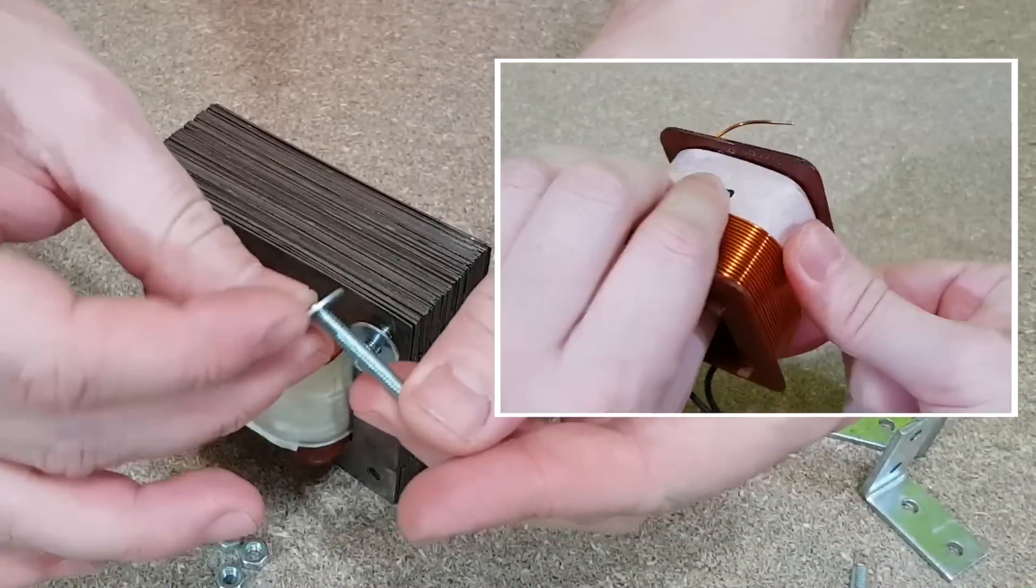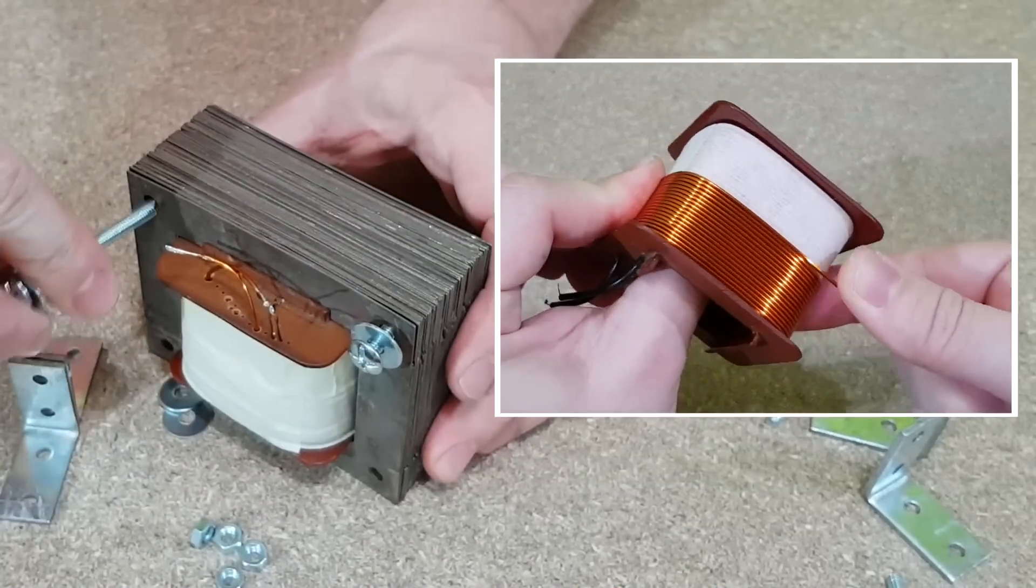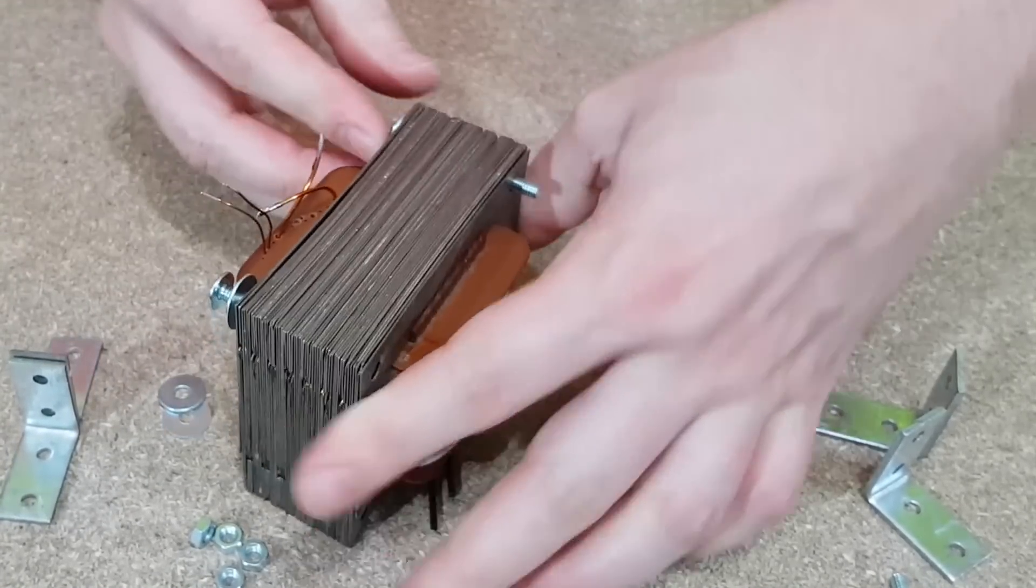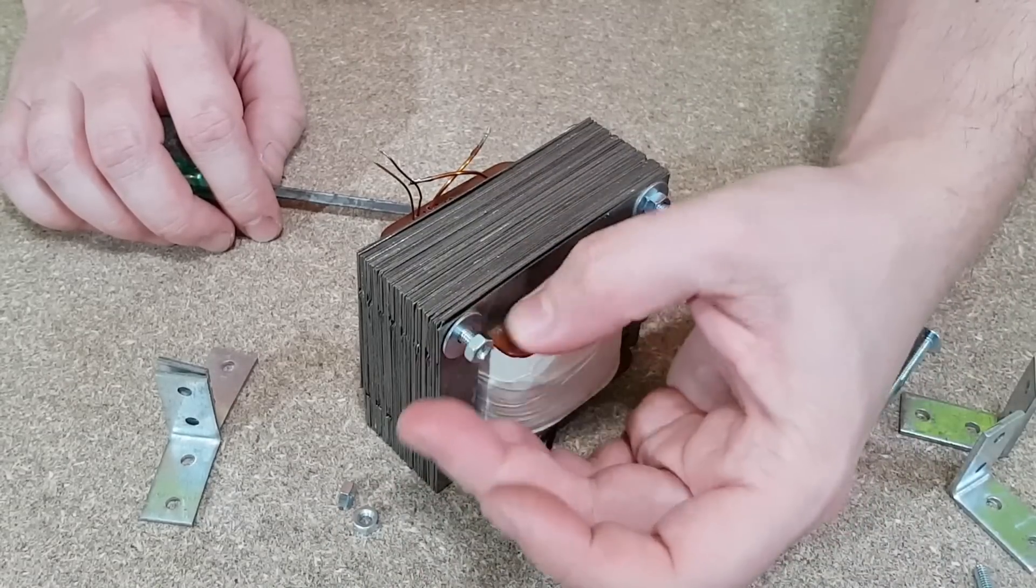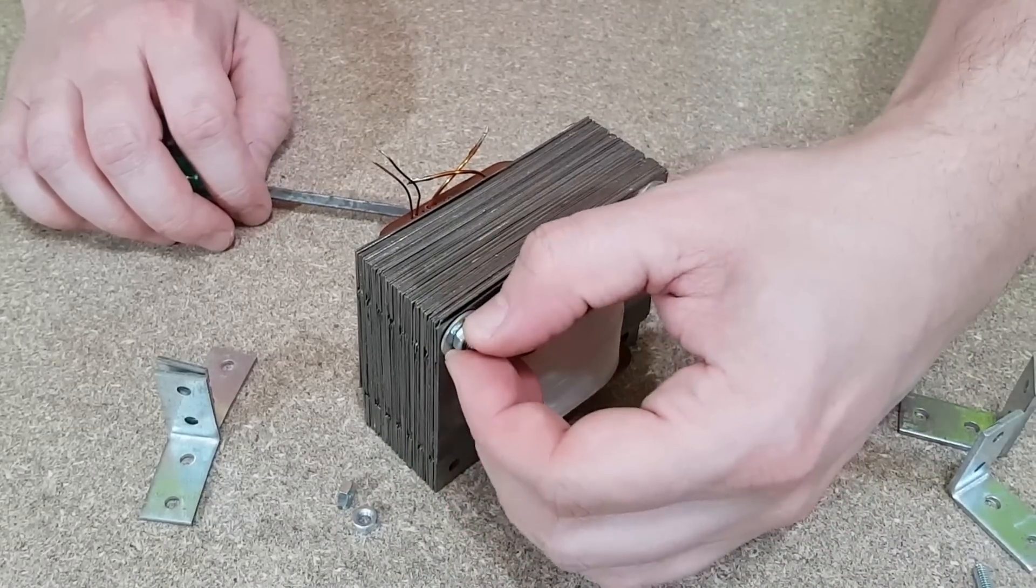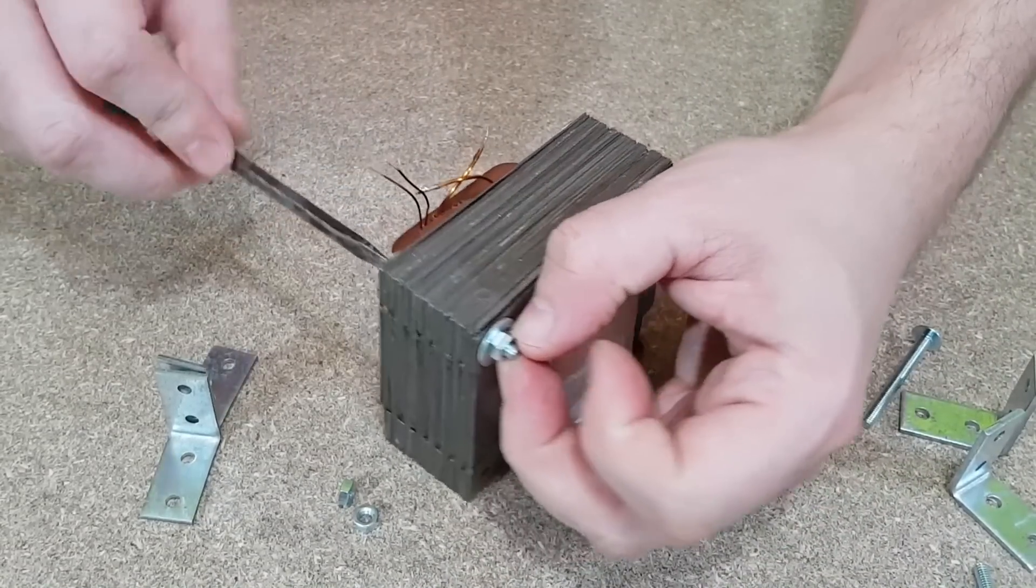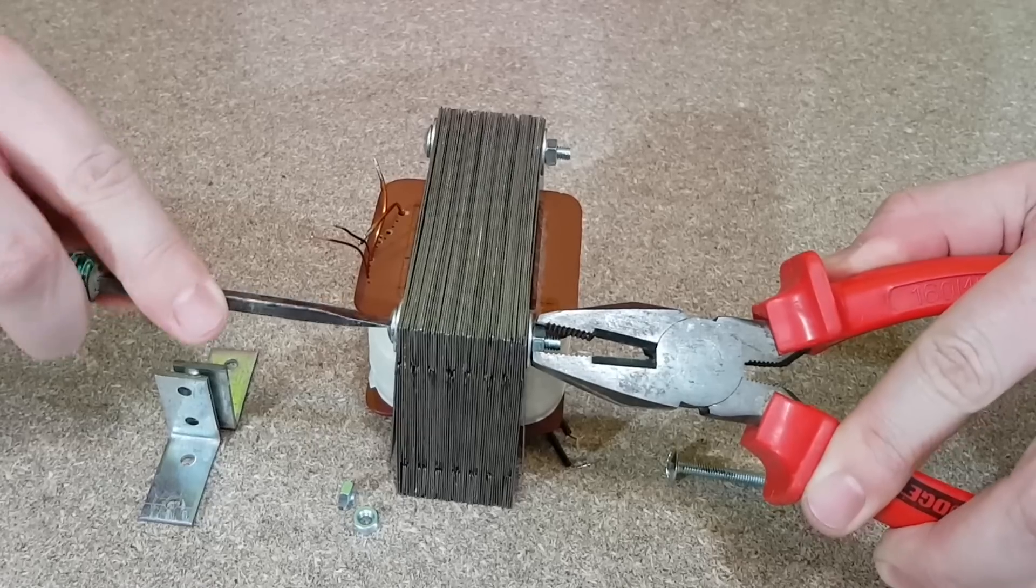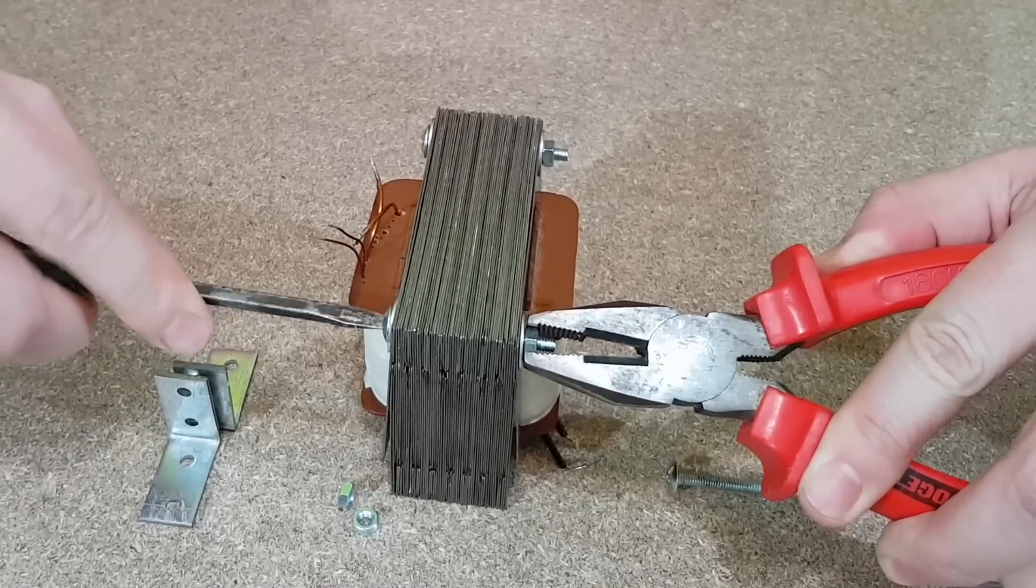In the previous episode I showed you how to modify a transformer and get any voltage you want from it. I will use this transformer made by me with two outputs, one with a peak voltage of 32 volts DC and around 3.5 amps and the second output of 11 volts DC for the voltmeter and ammeter display.